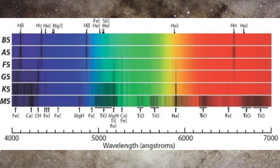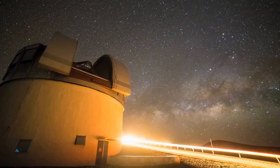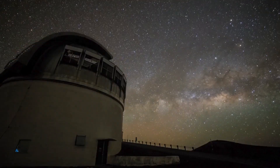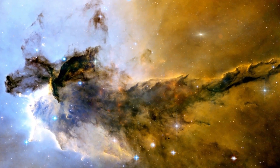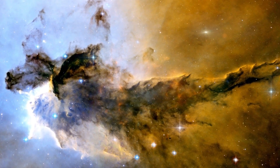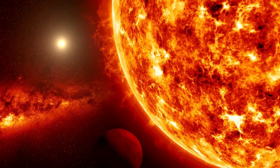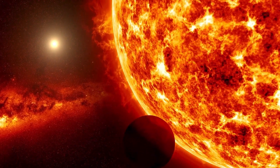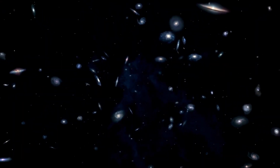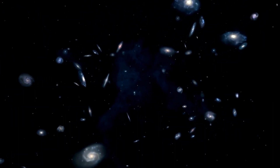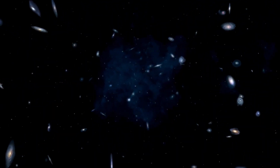Each element absorbs specific wavelengths of light, creating dark lines in the spectrum. By analyzing these spectral patterns, astronomers can determine a star's composition and age. The more gaps there are in a star's spectrum, the more metals are present in that star's atmosphere. Therefore, if a star exhibits numerous gaps, it indicates a higher metallicity, suggesting it formed later in the universe's history — implying that enough generations of stars had already lived and died, enriching the cosmos with heavier elements.